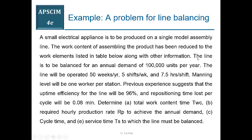The line is to be balanced for an annual demand of 100,000 units per year. You should note this statement: you have to balance this line using the balancing algorithm. The demand rate of 100,000 units per year must be achieved through your design. The line will be operated 50 weeks per year, 5 shifts per week, and 7.5 hours per shift. This is the total available time to achieve this demand.